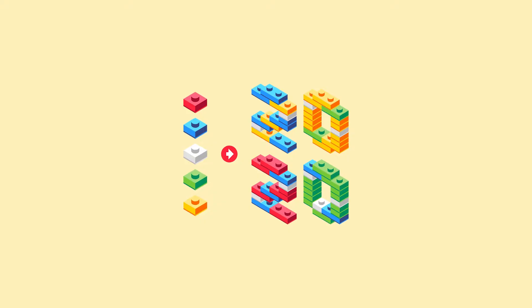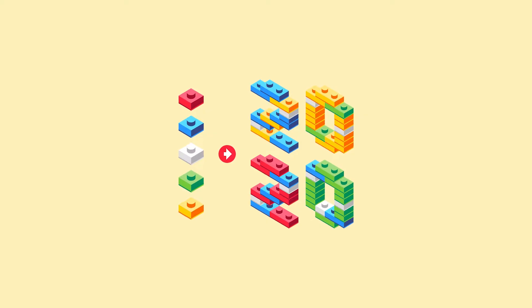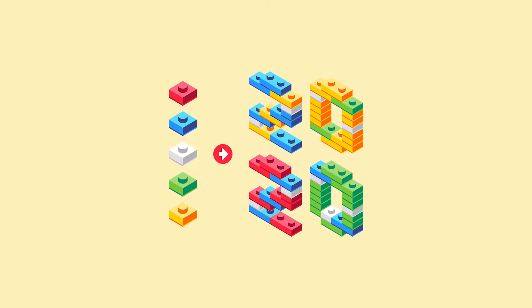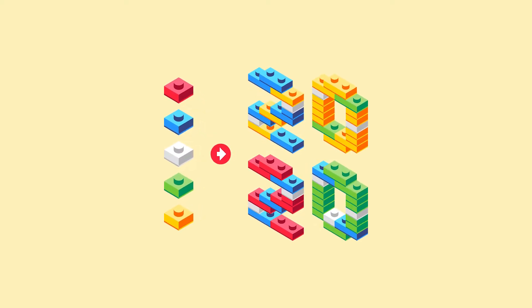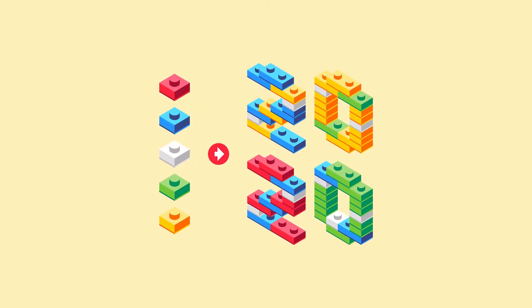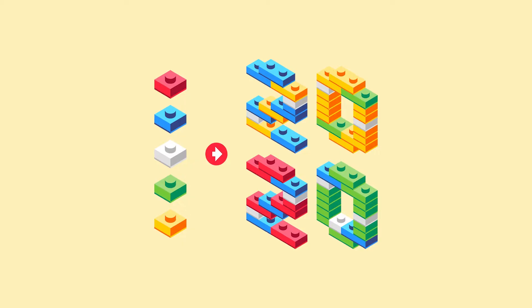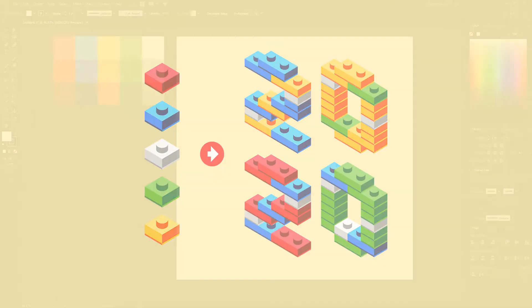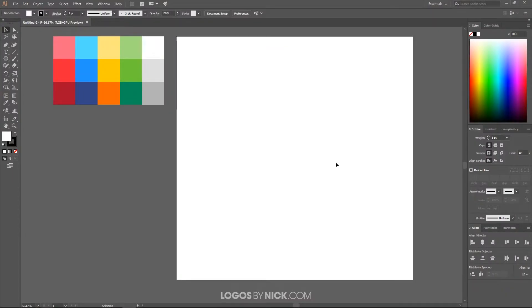This is Nick with LogosbyNick.com and in today's tutorial I'll be demonstrating how you can create isometric block letters that are made of individual Lego bricks using Adobe Illustrator. I'm going to go ahead and get started here in Illustrator.